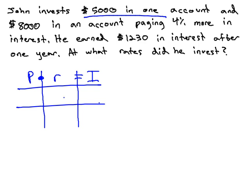We know John invests $5,000 in one account. So let's put $5,000 in the first account, but we don't know the interest rate. Let's call it R.